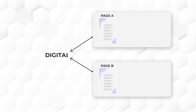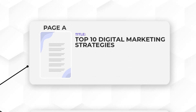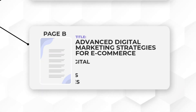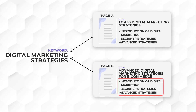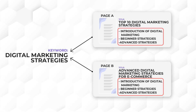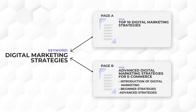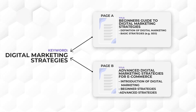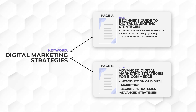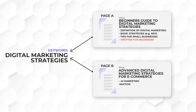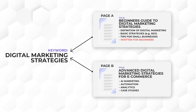The fourth solution depends on the context. If the same keyword could have different meaning in a broader context, rewrite or differentiate the content. For example, page A and B both rank for 'digital marketing strategies.' Rewrite page A to target beginners — 'Beginner's Guide to Digital Marketing Strategies' — covering definitions, basic strategies like SEO and content marketing, and tips for small businesses. For page B, revamp the content to focus on advanced techniques like AI marketing, automation and analytics, case studies specific to e-commerce, and in-depth guides for experienced marketers. This creates clear distinctions for search engines showing these pages serve different audiences.